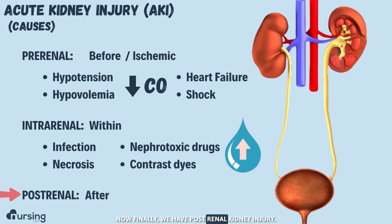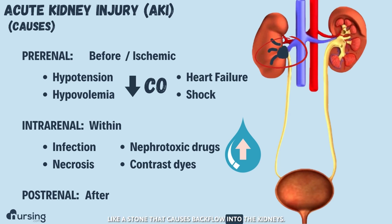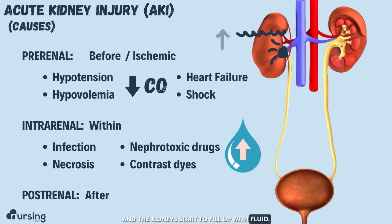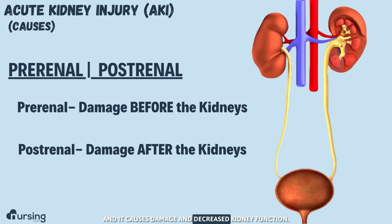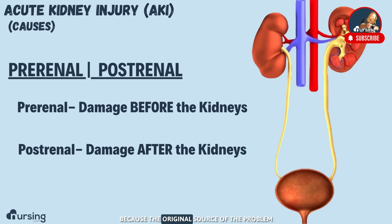Post-renal kidney injury is caused by something happening after the kidneys. Usually there's some sort of infection or obstruction like a stone that causes backflow into the kidneys. The kidneys fill with fluid because it can't get out. This is called hydronephrosis — when the kidneys begin to fill with fluid, it causes damage and decreased kidney function. Pre-renal and post-renal sources both ultimately cause damage to the kidney itself, but we name them because the original source of the problem is either before or after the kidney.